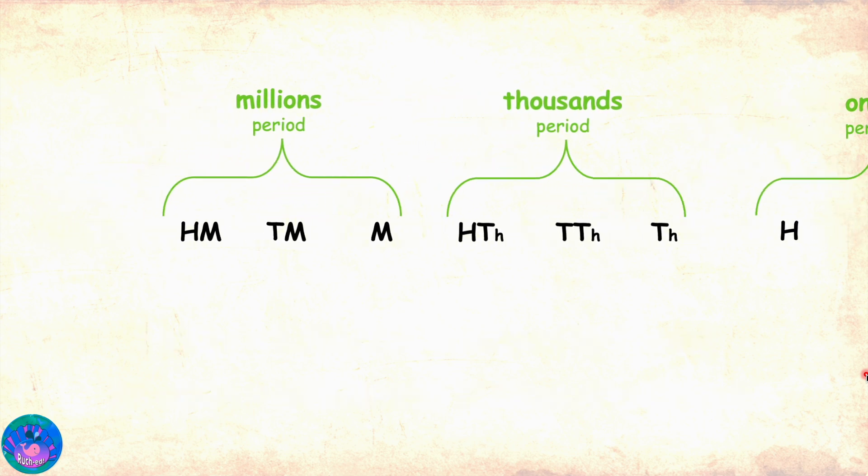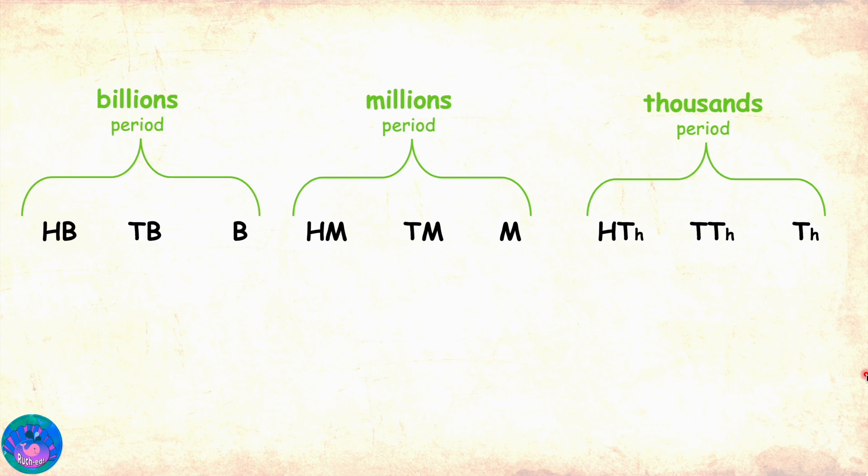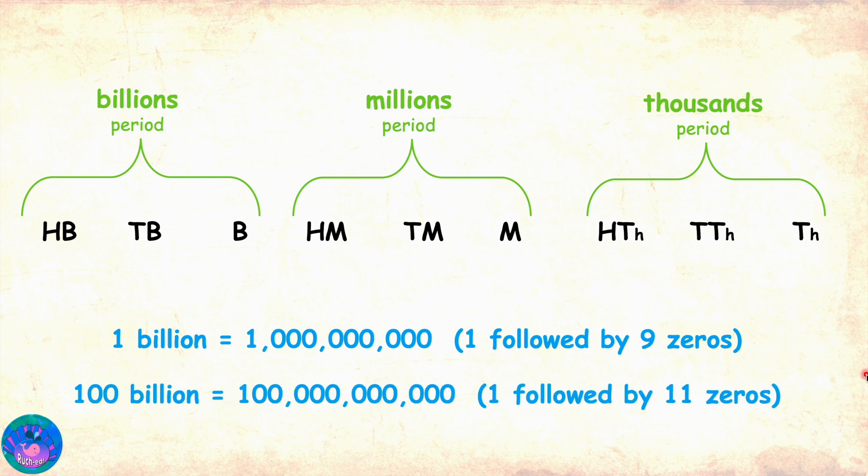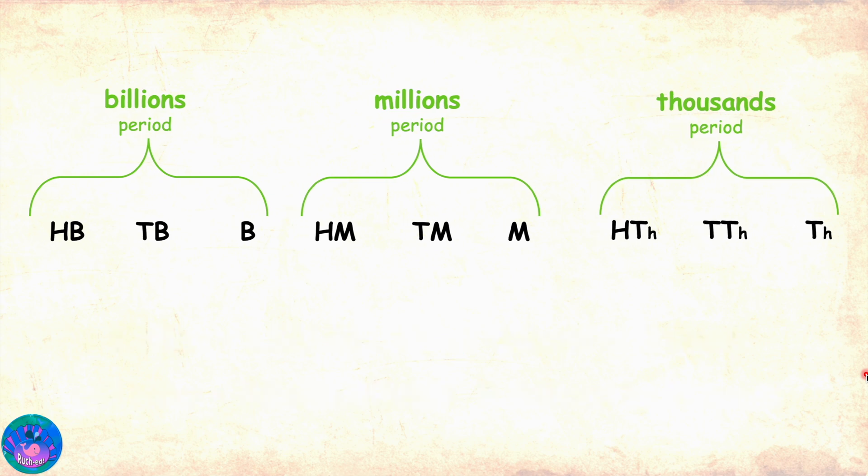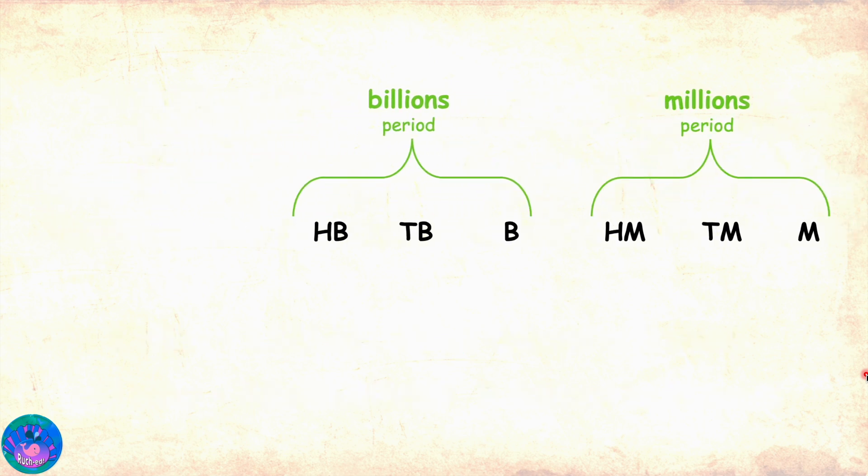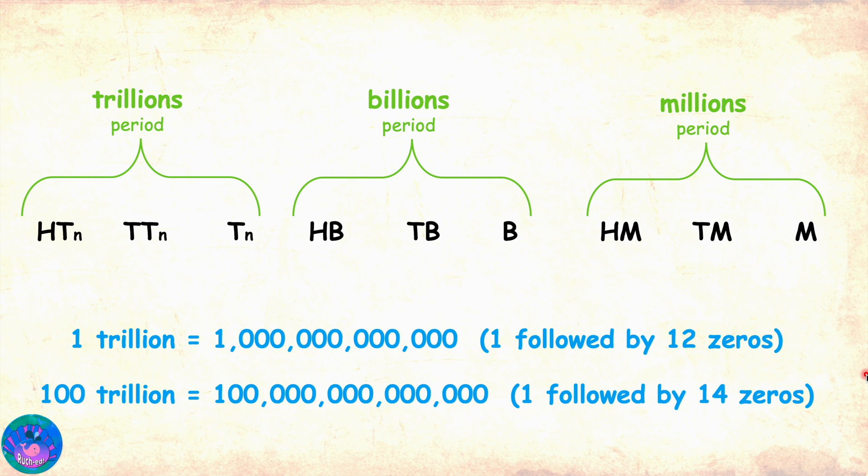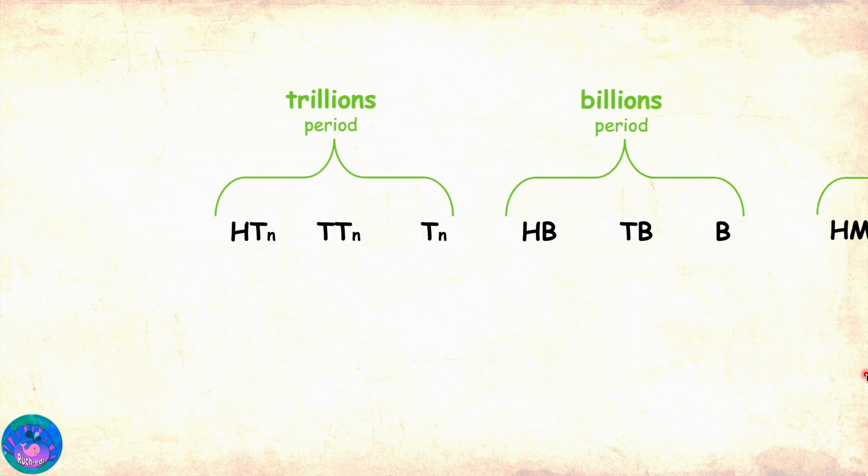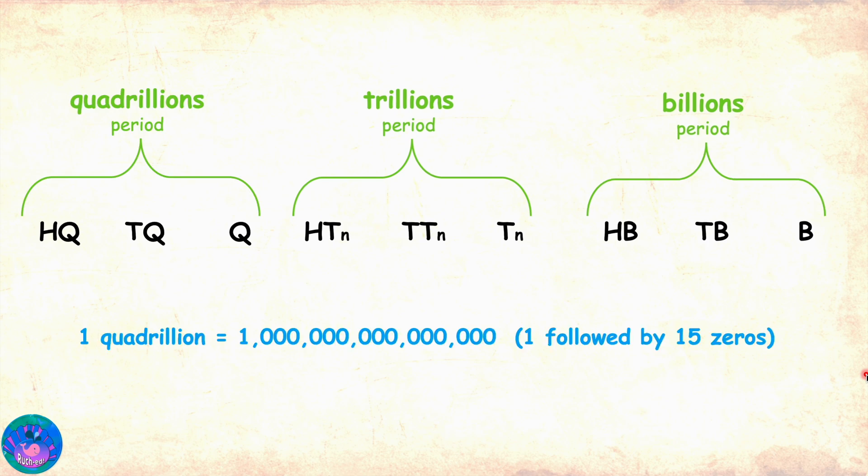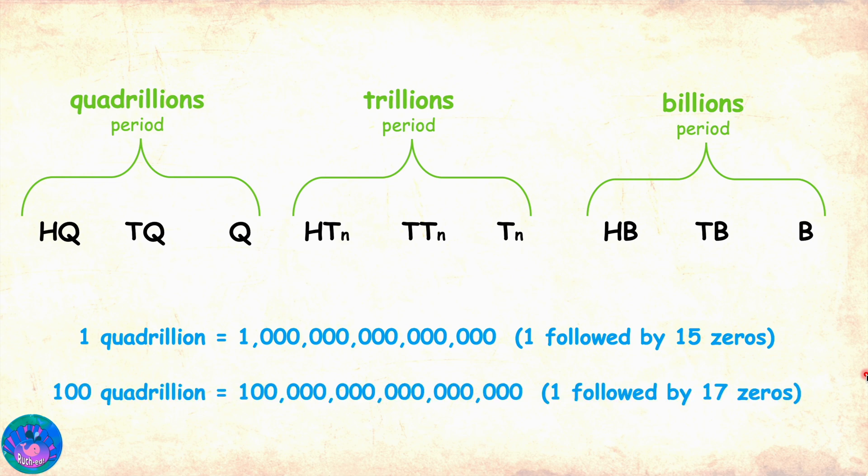One billion is one followed by nine zeros. And one hundred billion is one followed by eleven zeros. And after that, we will have trillions period. One trillion is one followed by twelve zeros. And one hundred trillion is one followed by fourteen zeros. After that, we will have quadrillions period. One quadrillion is one followed by fifteen zeros. And one hundred quadrillion is one followed by seventeen zeros. Now, we can keep going on as numbers do not end. But, let's stop here.